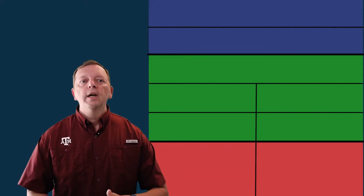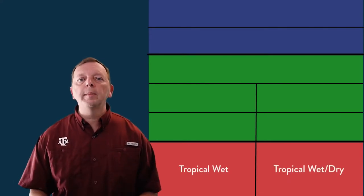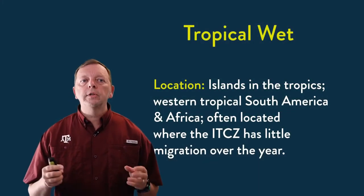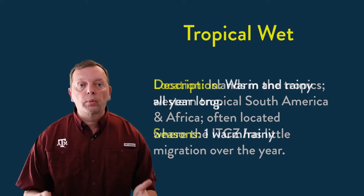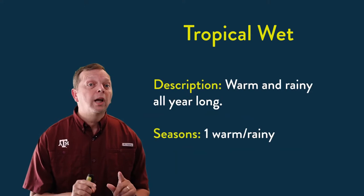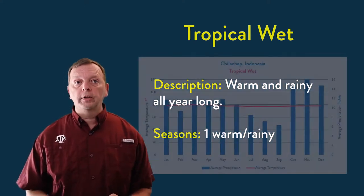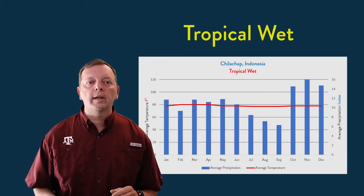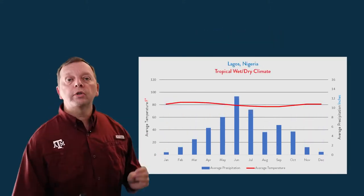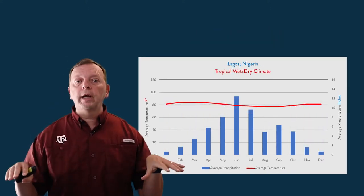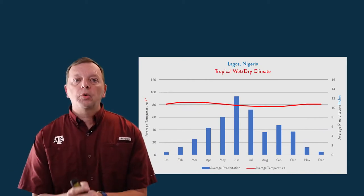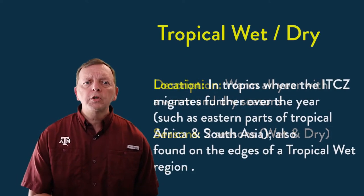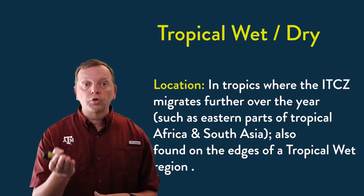The low latitudes, remember those are called the tropics, is where we find the tropical wet and the tropical wet dry climates. Both of these climates are warm all year long. Tropical wet climates are often found in the islands and the tropics where the ITCZ doesn't move very much throughout the year, creating rain all year long. So a tropical wet climate really only has one warm rainy season throughout the year. You can see by the climate graph how both the temperature and the amount of precipitation are high throughout the year. Now compare that with the tropical wet dry climate, which still has warm weather all year but has a distinct wet season and a dry season. This climate is generally found where the ITCZ moves much more north and south throughout the year, creating those dry and wet seasons.